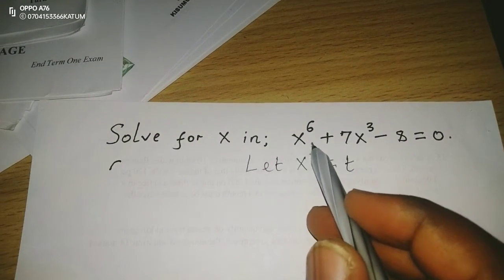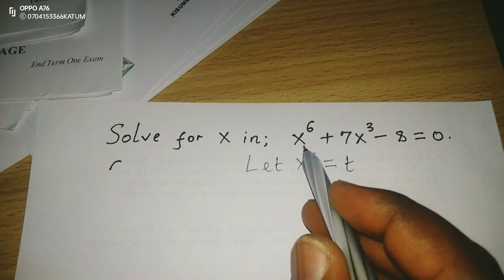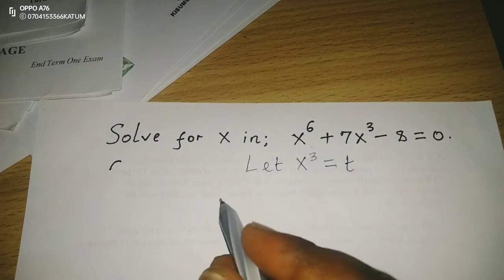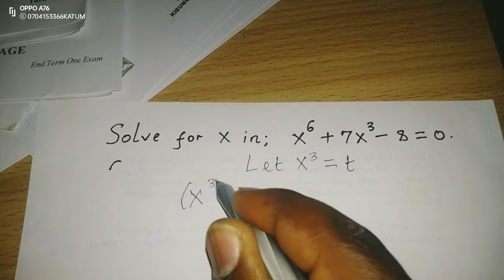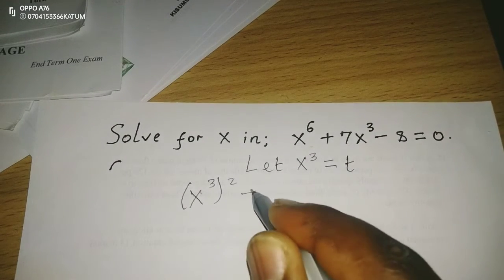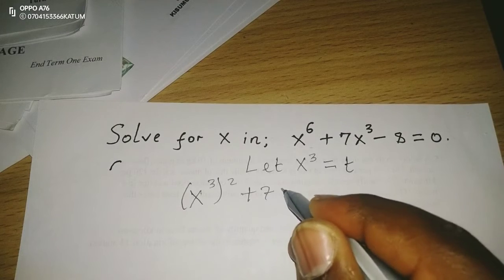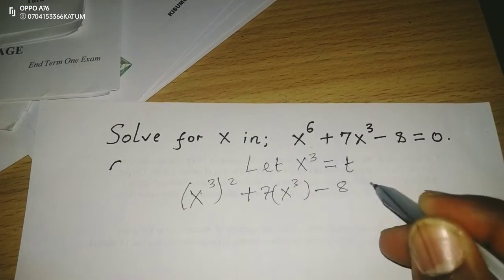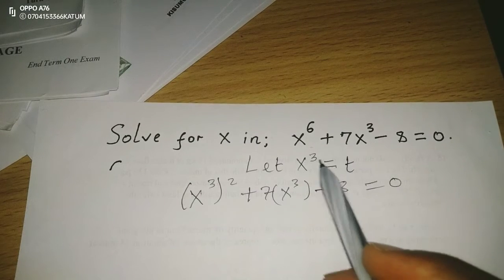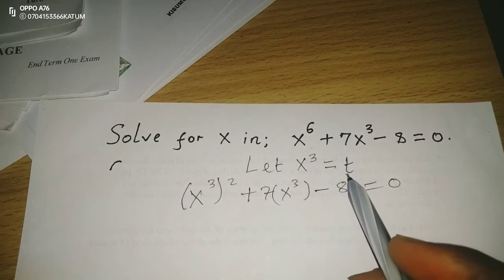Therefore, at this point, when we factor out x^t, you realize it is (x^3)^2 plus 7x^3 minus 8 equals to 0. Therefore, wherever we have x^3, now we can have t, so that in the first term,